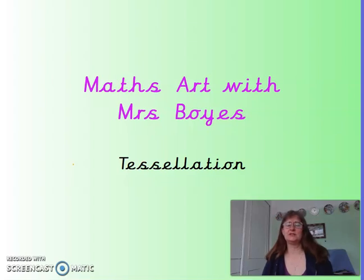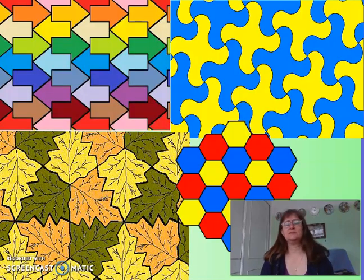Squares tessellate as well as do some triangles, but today we're going to look at some slightly more complicated shapes. So here are some examples, there's some hexagons down at the bottom as well as some other shapes.